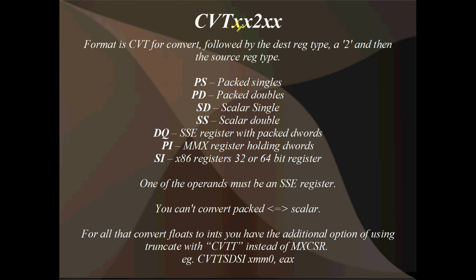The general format of the conversion instructions: we've got CVT, then what you want to convert from, then a 2 - kind of like LeetSpeak - then what you want to convert to. So convert packed singles to packed doubles is CVTPS2PD. One of the operands must be an SSE register - this is a limitation of the conversion instructions, they are SSE instructions. And you can't convert from packed to scalar - that doesn't make any sense.